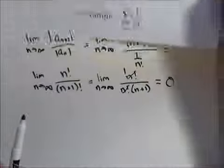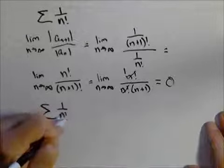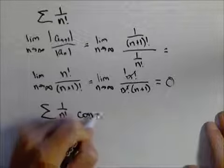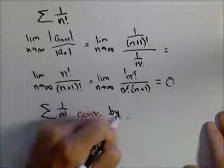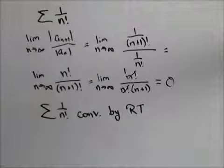Means our series converges. So we know that one over n factorial converges by the ratio test. That's a basic example of how we can apply the ratio test.